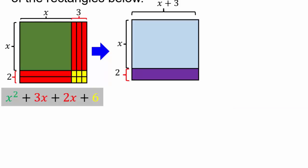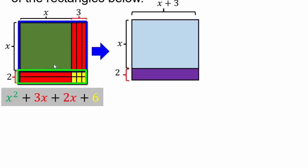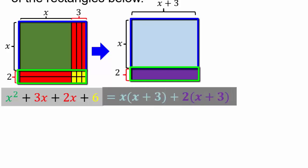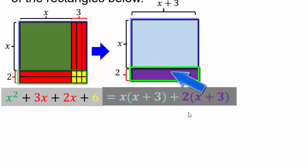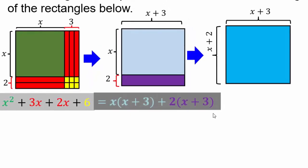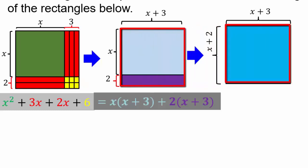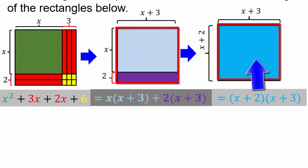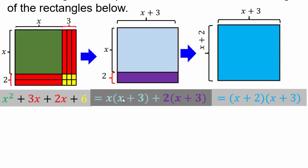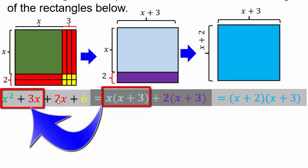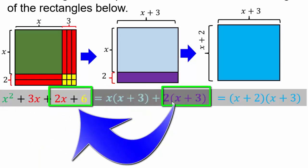It's the same picture except we've horizontally combined the green and vertical reds, then horizontal reds and yellows together. It will be x times x plus 3, which is the upper part of the rectangle, and then the purple part below: 2 times x plus 3. x squared plus 3x has x as greatest common factor, so x times x plus 3. And 2x and 6 have greatest common factor 2, giving 2 times x plus 3.